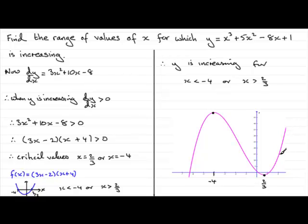Now, if the question had been, as I say, decreasing, everything would have been essentially much the same. We'd have said when y is decreasing here, dy/dx would have been less than zero. This would have been less than zero. This would have been less than zero. We'd have had the same critical values, but we would be looking for where the graph was now below the x-axis here, where it is negative. And that would be between minus 4 and two thirds.